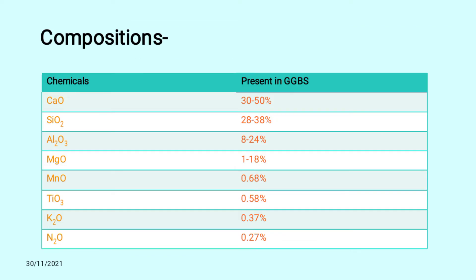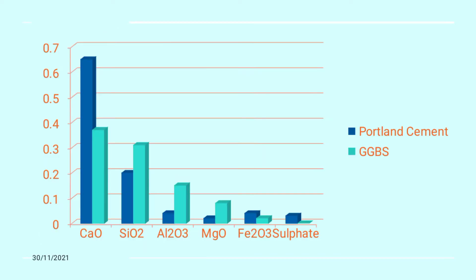These are the composition of GGBS. Calcium oxide is present at 30 to 50%, silica oxide at 28 to 38%, aluminium oxide at 8 to 24%, magnesium oxide at 1 to 18%, manganese oxide at 0.68%, titanium trioxide at 0.58%, potassium oxide at 0.37%, and nitrous oxide at 0.27%.